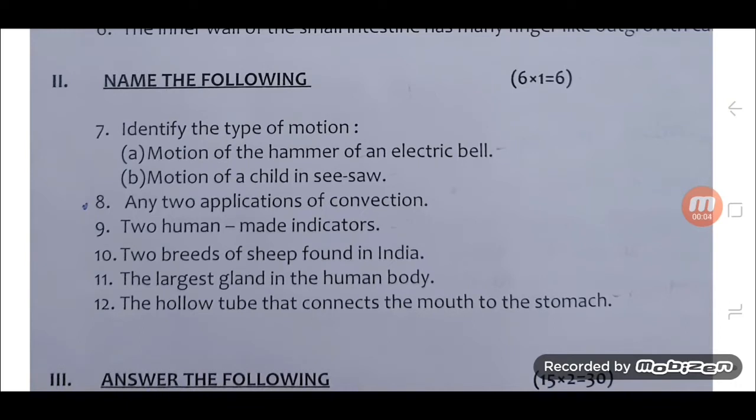Name the following. 7th question. Identify the type of motion. A. Motion of the hammer of an electric bell. B. Motion of a child in seesaw.